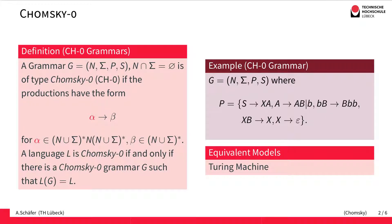A production must have the form where we replace an alpha by a beta, such that alpha is a string where first we have an arbitrary string consisting of terminals and non-terminals (which may even be empty), then there must be a non-terminal, and then again a string of terminals or non-terminals which can also be empty. So what it actually means is that on the left-hand side of a production there must occur at least one non-terminal. On the right-hand side, beta can be any combination of non-terminals or terminals, and it can also be the empty word.